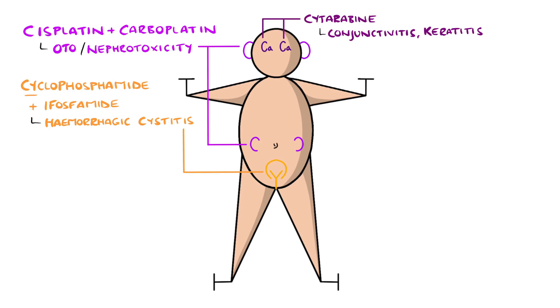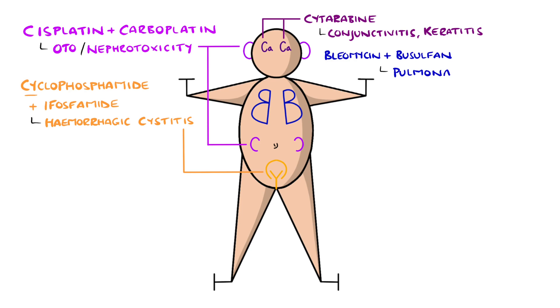Drawing two B's in the chest resembles lungs, to remember that bleomycin and busulfan cause pulmonary fibrosis.